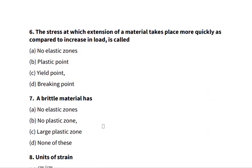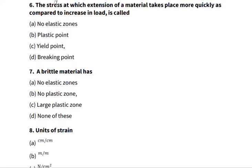Number six: the stress at which extension of a material takes place more quickly as compared to the increase in load is called. When you look at the graph of how things deform, a situation where a material extension takes place more quickly than the load being applied is the yield point. The material is said to be yielding when it's extended, which is not proportional to the load being applied.